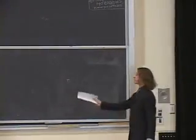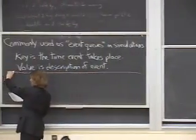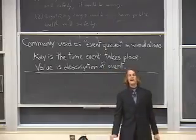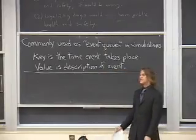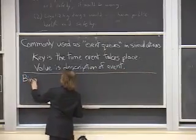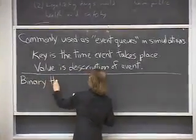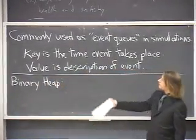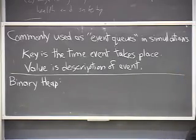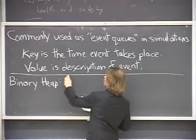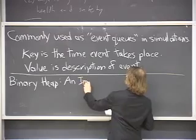I'm going to spend the rest of this lecture talking about how to implement a priority queue efficiently. The simplest and generally fast-in-practice implementation uses a data structure called a binary heap. A priority queue is an abstract data type, and binary heaps are a particular implementation of that data type.